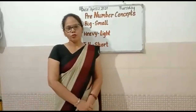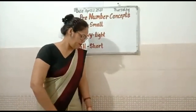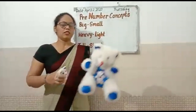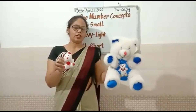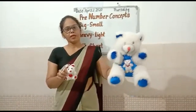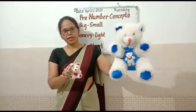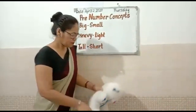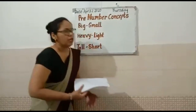I will show you some examples related to these topics. Big and small — this toy is big and this toy is small. Big means bada, small means chota. This is big and this is small.